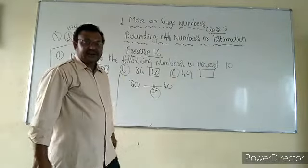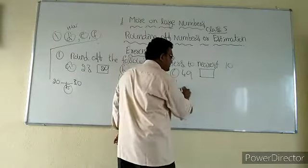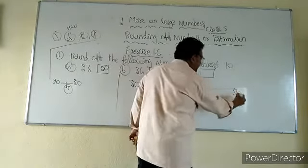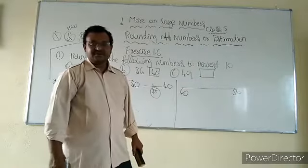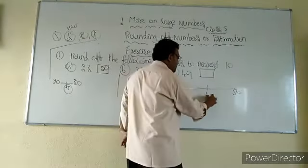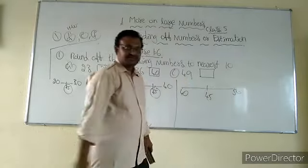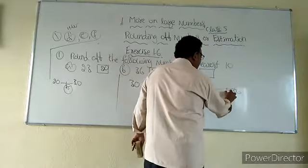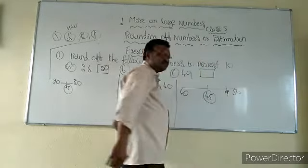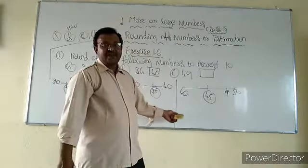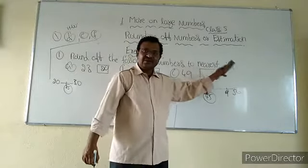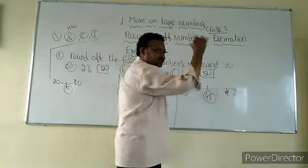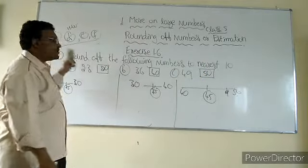Next, 49. 49 is in between two tens — 40 and 50. The halfway between 40 and 50 is 45. The given number is 49, so it will be in the part of more than halfway. More than halfway means we have to round up the given number to the next ten, which is 50. The remaining questions D, E, F you have to do as homework.